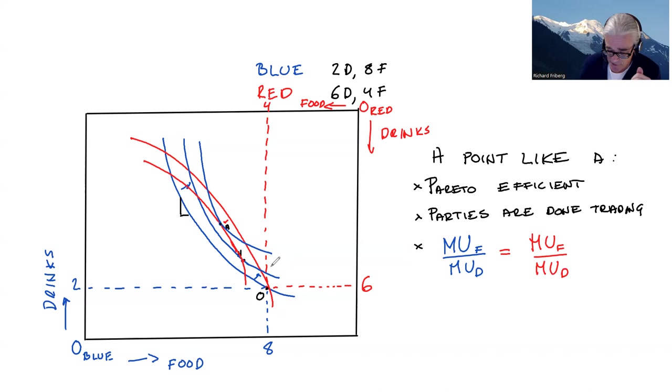So these are three ways to characterize a point like A. And importantly, there will be very many points like A throughout here, any point of tangency, and we can connect those by something that we call a contract curve.